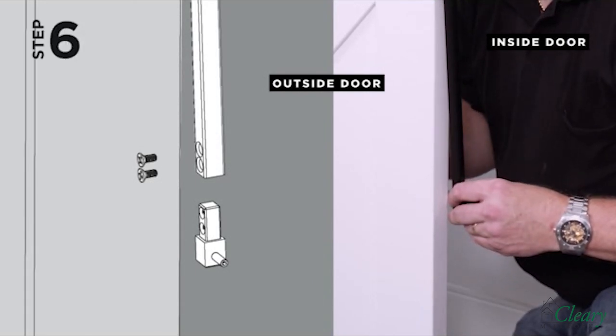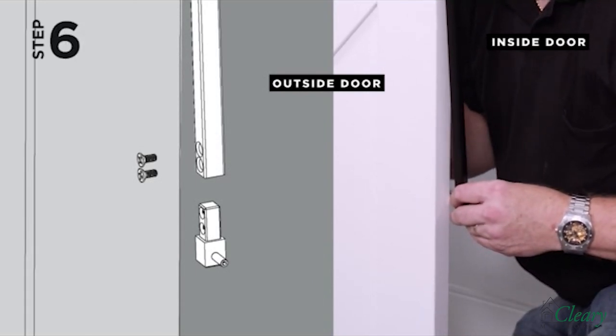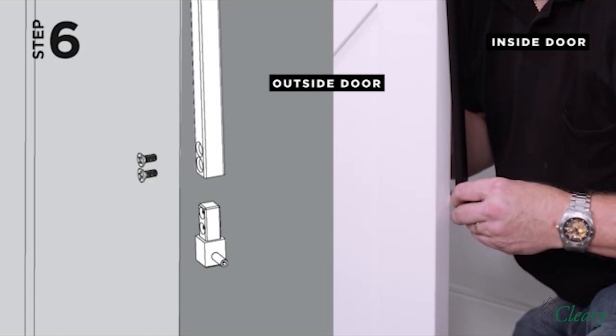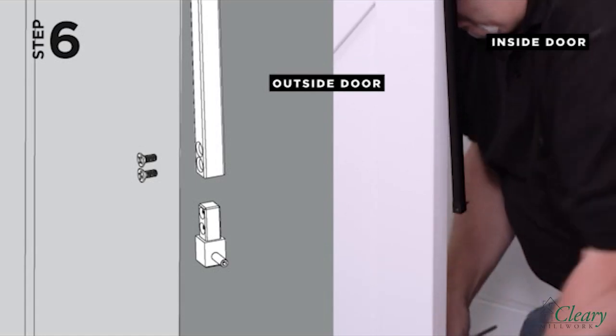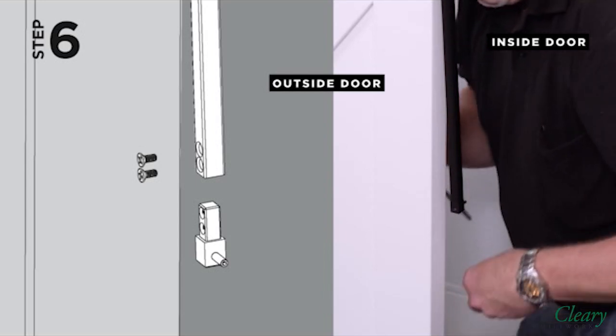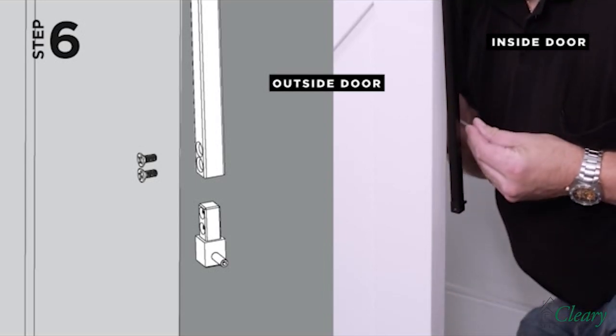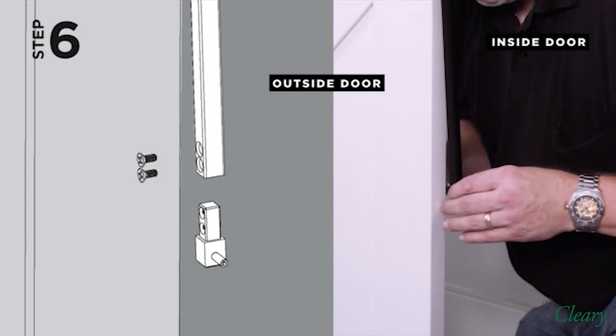Step 6. Insert the engagement pin block assembly into the bottom end of the rod with the pin facing the side of the door the handle will be affixed to as shown in Step 8. Note, angle the rod slightly so you can access the screw holes and affix with the screws provided.